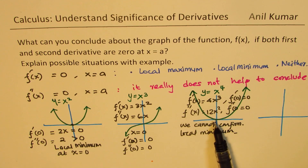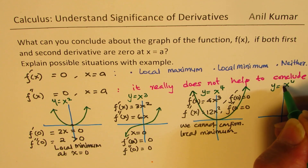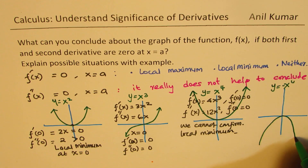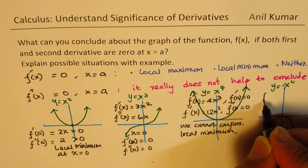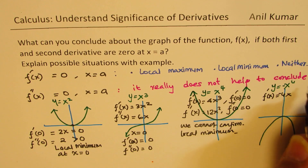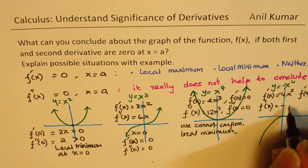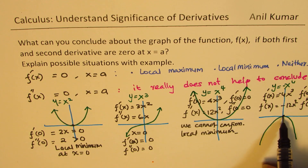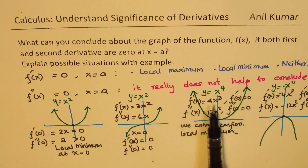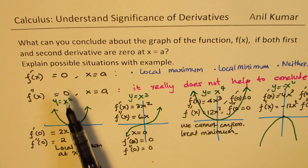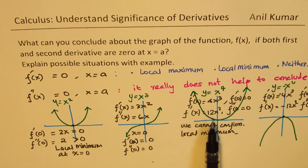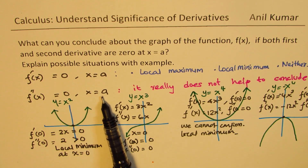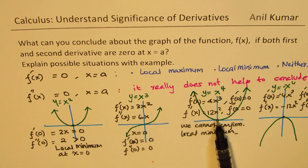Let's take another example where we make it a maximum by adding a negative sign: y equals negative x to the power of 4. The graph shows a local maximum. The first derivative is negative 4x cubed, which equals 0 at 0. The second derivative is negative 12x squared, which is also 0 at 0. Since both are 0, we cannot confirm the local maximum. So in all three situations, both derivatives being 0 gives no confirmation of whether we have a point of inflection, local minimum, or local maximum.